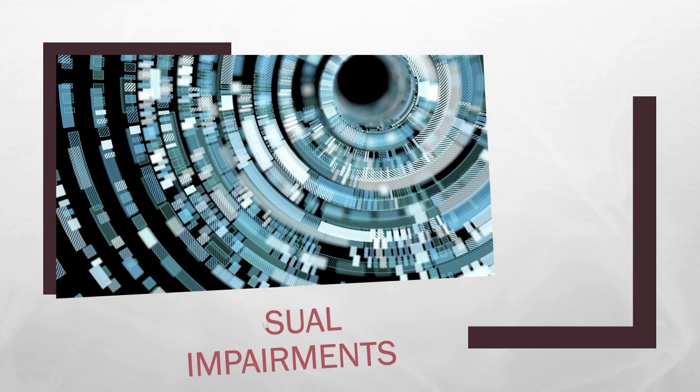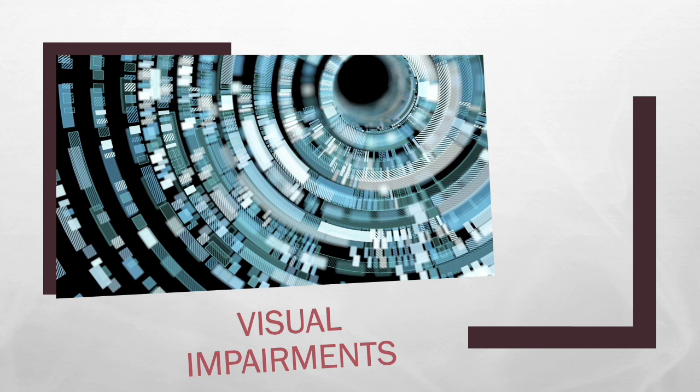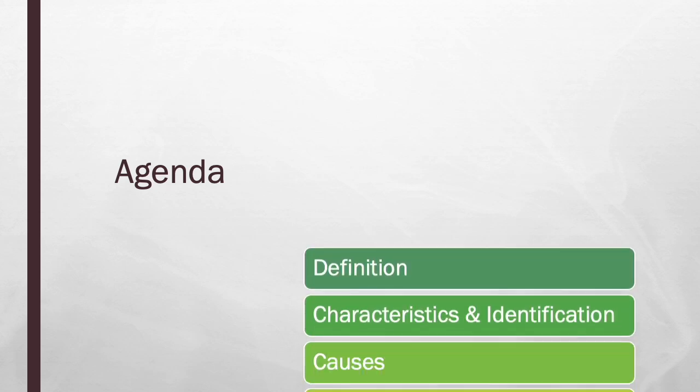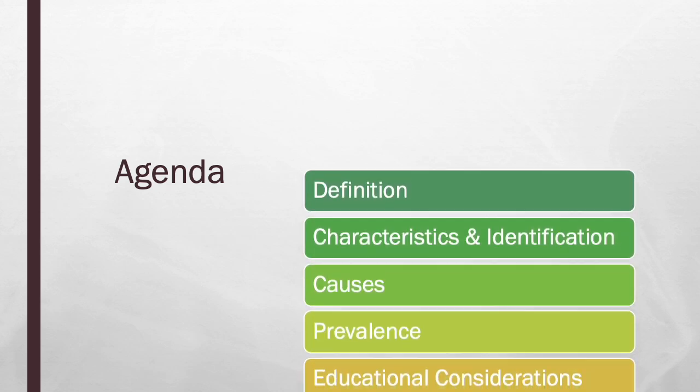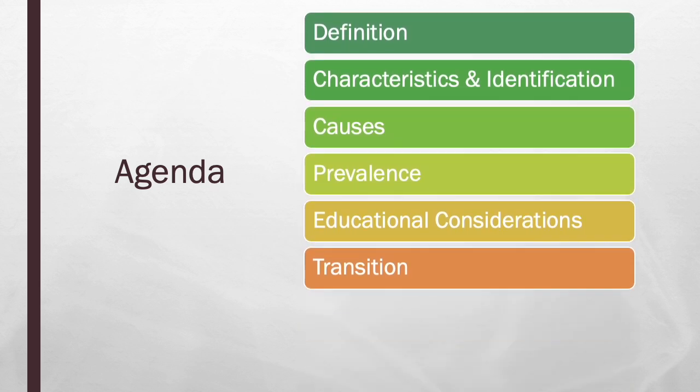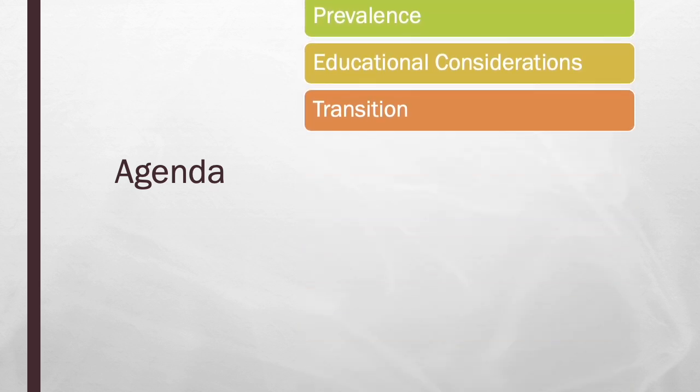Hi everyone! Today, let's talk about visual impairments, abbreviated as VI. During today's presentation, we will talk about the definition, characteristics and identification, causes, prevalence, educational considerations, and transition for visual impairments.